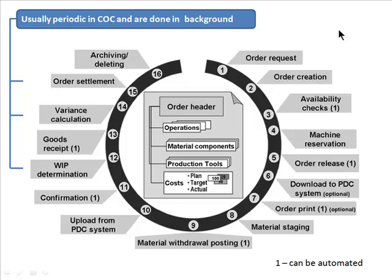The second step is to actually create the order. Before you can release the order, you want to make sure all the things needed for the order are available — that's what the availability check is. For example, you created the order and at that time you might have created certain reservations for materials, but before releasing you want to confirm those materials are actually available at that point in time.